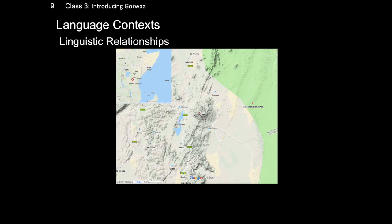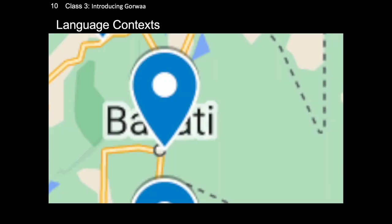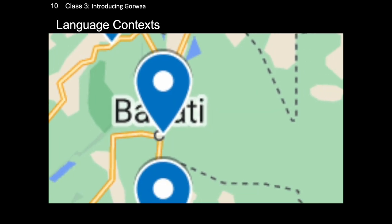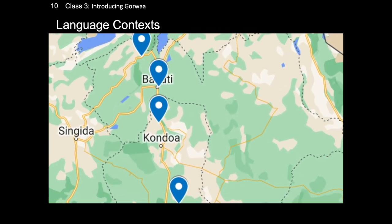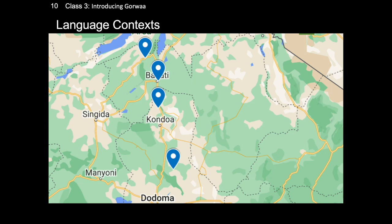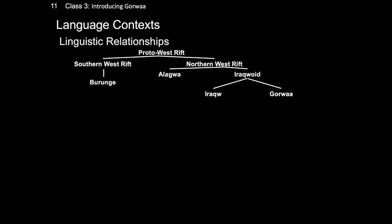I'd like now to talk about linguistic relationships — the links that exist between Gorwa and other languages, both through shared origin or through geographical proximity. If we swap our visualization representing the Gorwa speaking community as the single blue pin at the center of the map and zoom out, we can see all of the other languages to which Gorwa is closely genetically related. These range from Iraqw at the top, spoken across a large area of north central Tanzania by almost half a million people, to Burunge at the very bottom, probably spoken today by less than 13,000 speakers. This group of languages is known as the southern Cushitic branch of Cushitic languages, and in a genetic tree adapted from Kiesling and Mous 2003 can be represented as such. We can see that Gorwa shares the closest genetic relationship with Iraqw.